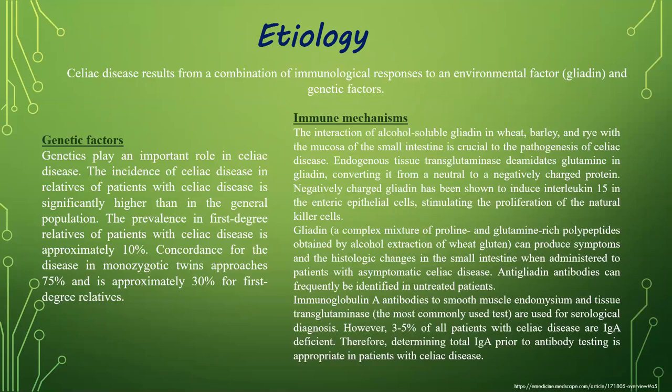The interaction of alcohol-soluble gliadin in wheat, barley, and rye with the mucosa of the small intestine is crucial to the pathogenesis of celiac disease. Tissue transglutaminase deamidates glutamine in gliadin, converting it from a neutral to a negatively charged protein. Negatively charged gliadin has been shown to induce interleukin-15 in enteric epithelial cells, stimulating the proliferation of natural killer cells. Gliadin can produce symptoms and histological changes in the small intestine. Anti-gliadin antibodies can frequently be identified in untreated patients.